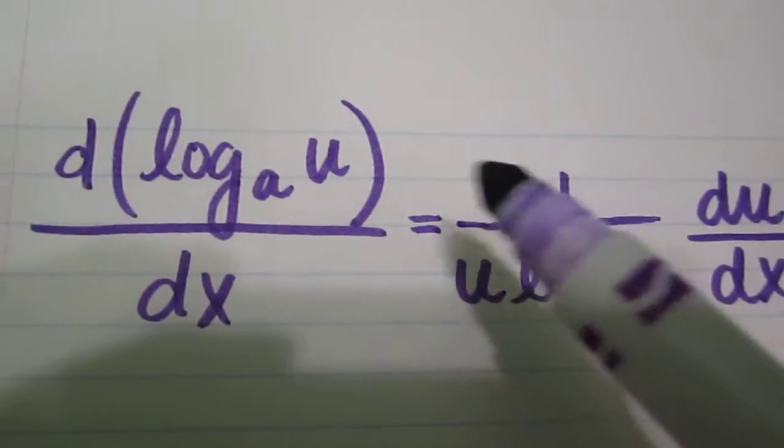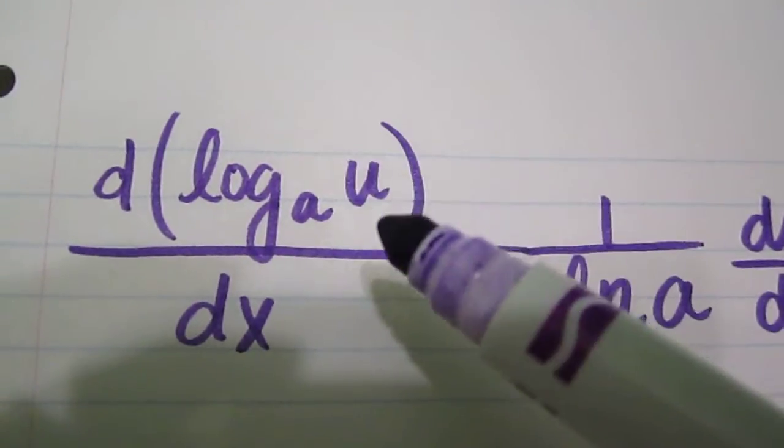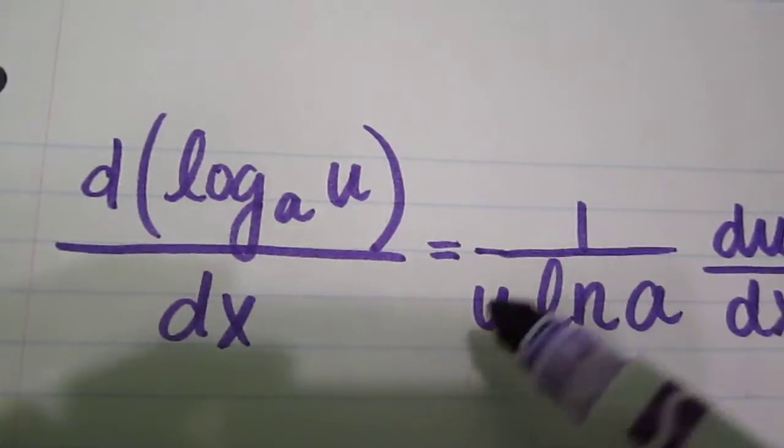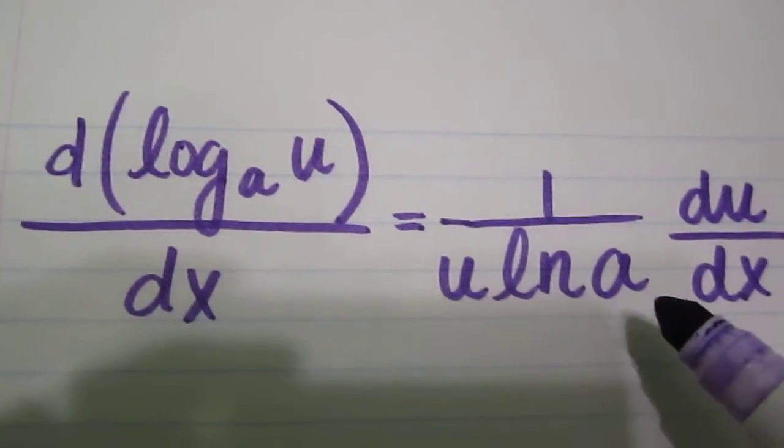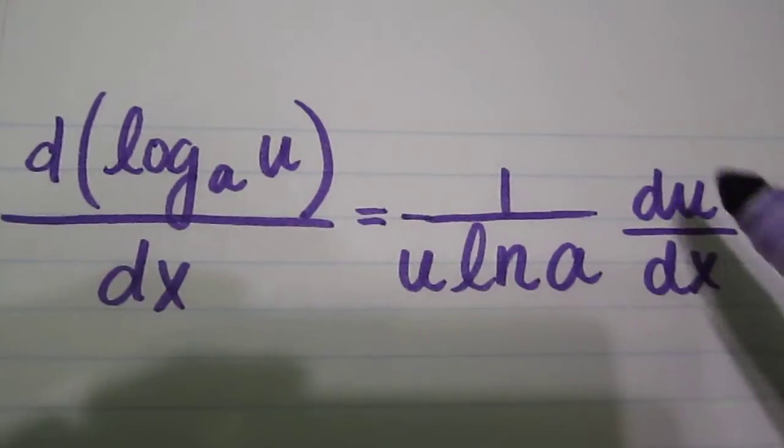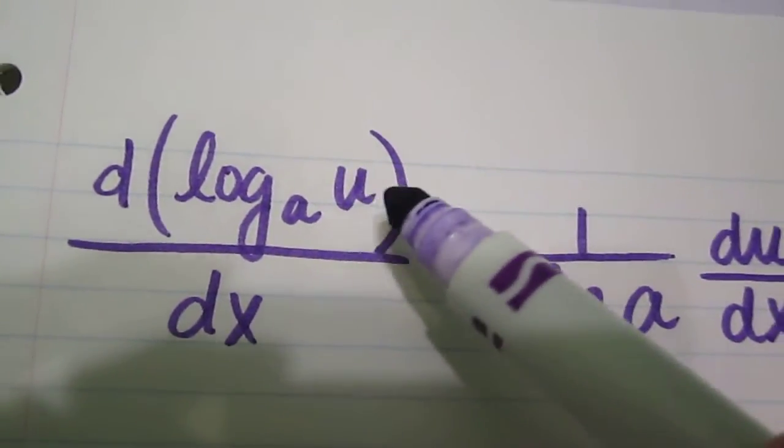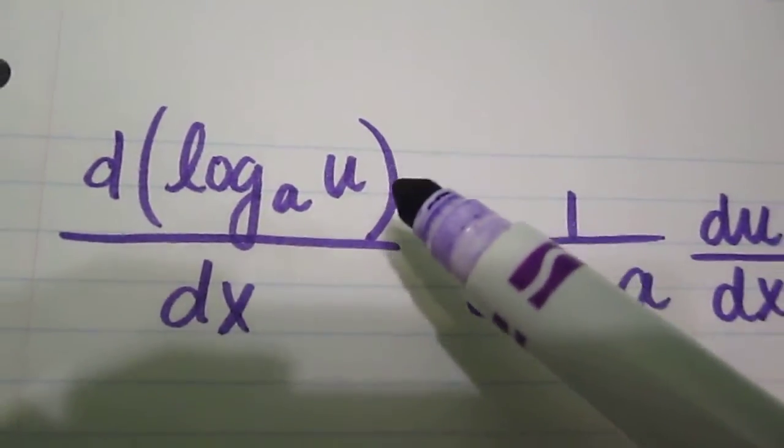This says that the derivative of log base a of u is 1 over u natural log a times du dx. This means that you're going to take the derivative of u if needed, if it's not already x. So let's do an example problem.